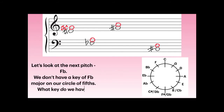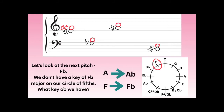Let's look at the next pitch, F-flat. We don't have a key of F-flat major on our circle of fifths. What F key do we have? F major — which has one flat: B-flat. So A is natural in the key of F. Now we need to find a major third above F-flat. Let's move that F down a chromatic half-step to F-flat, which means we also move our upper pitch down to an A-flat in order to maintain the same quantity and quality of interval. An F to an A is a major third; therefore, an F-flat to an A-flat is also a major third. The correct answer is A-flat.